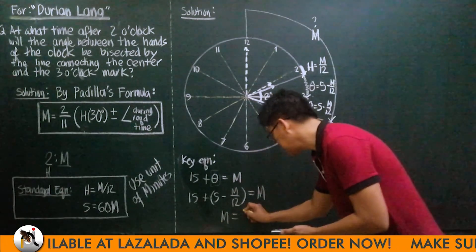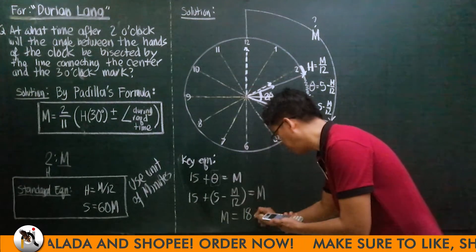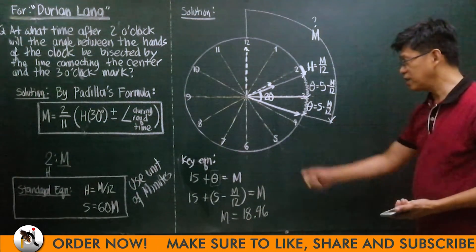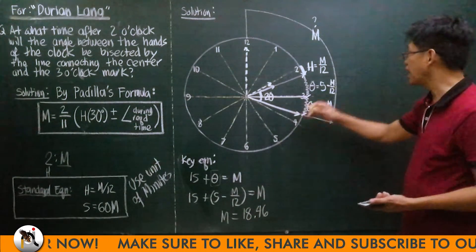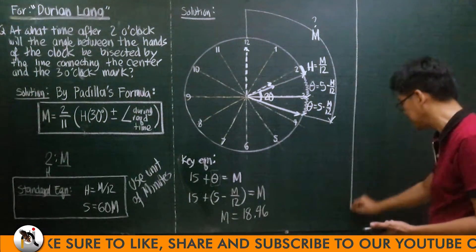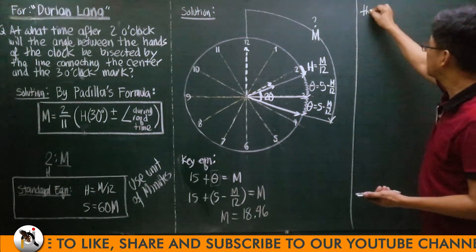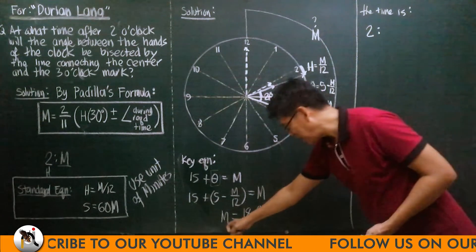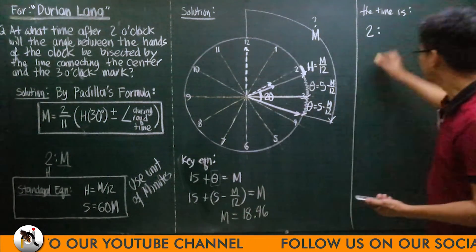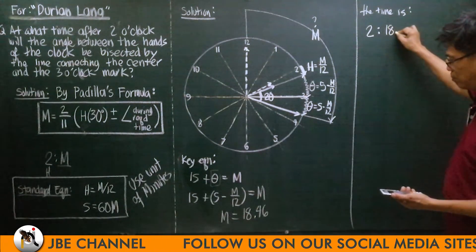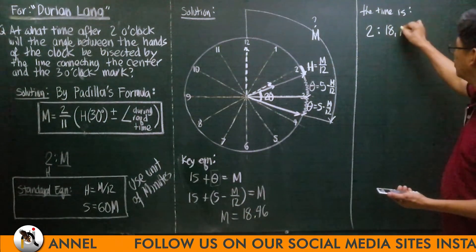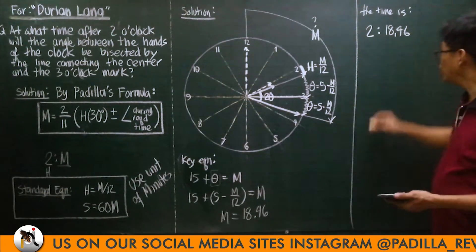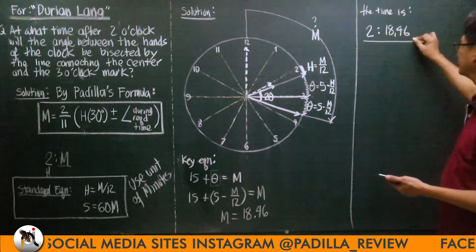Solving for M from this equation gives M = 18.46 minutes. Therefore, the time is 2 hours and 18.46 minutes.